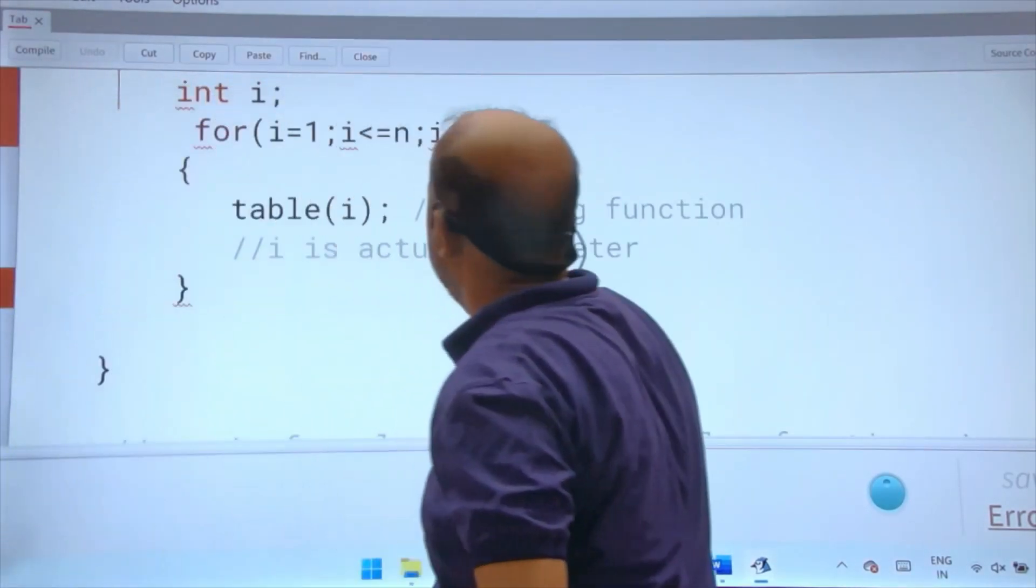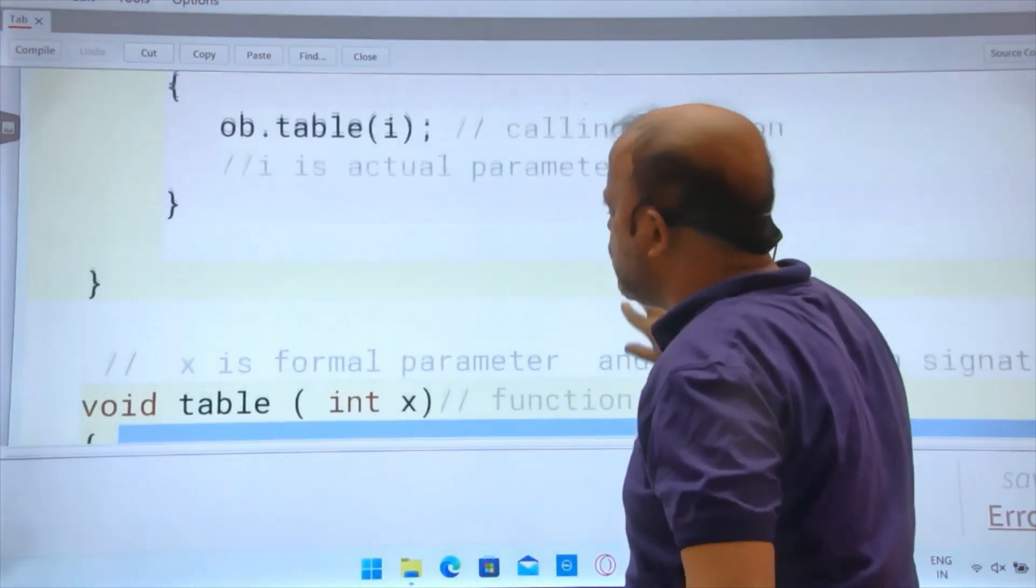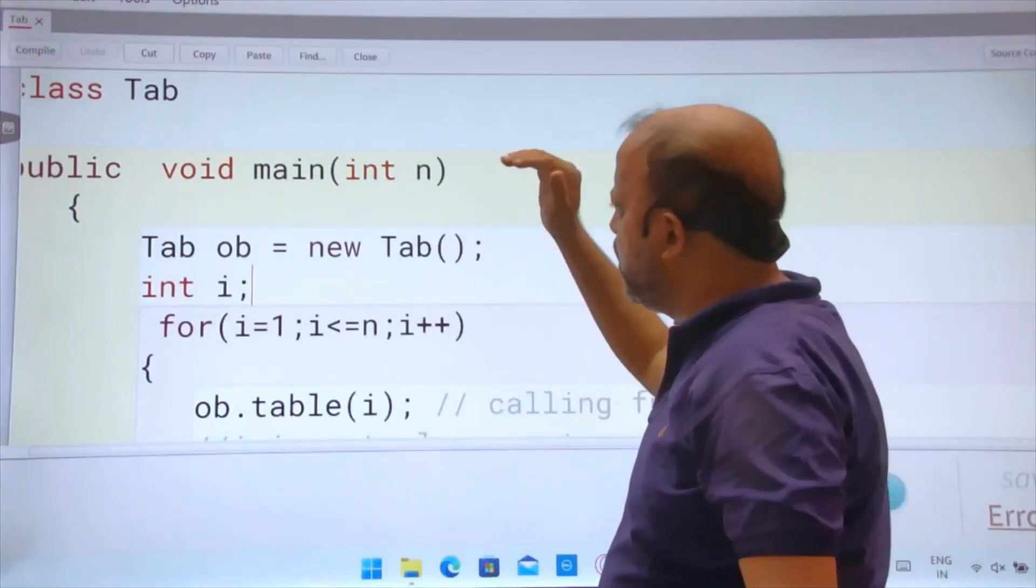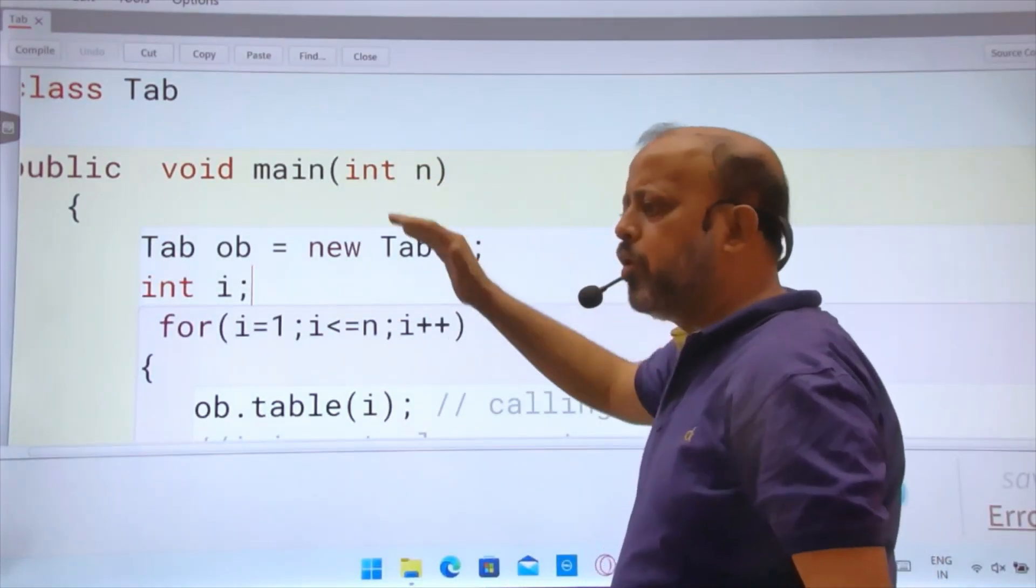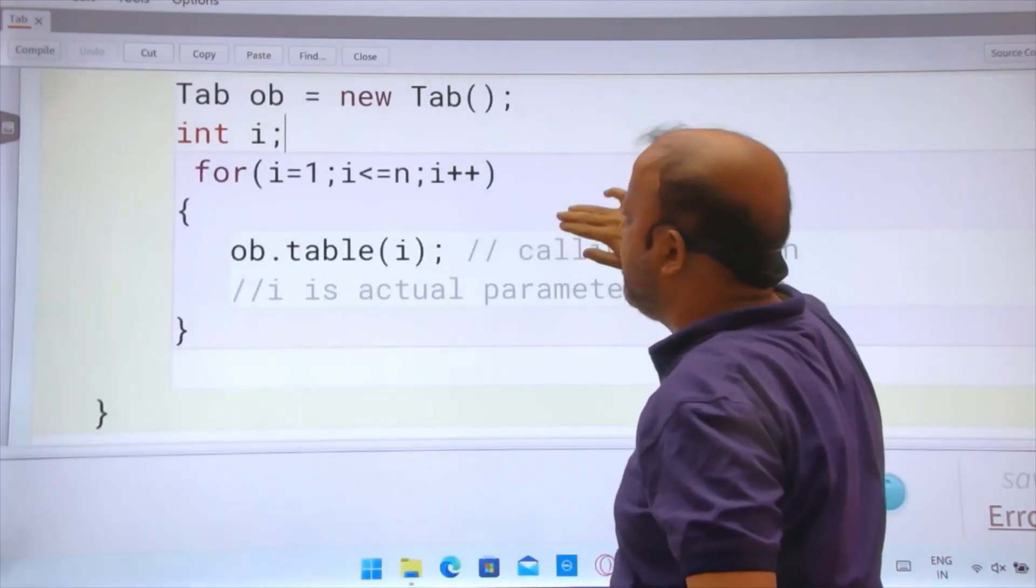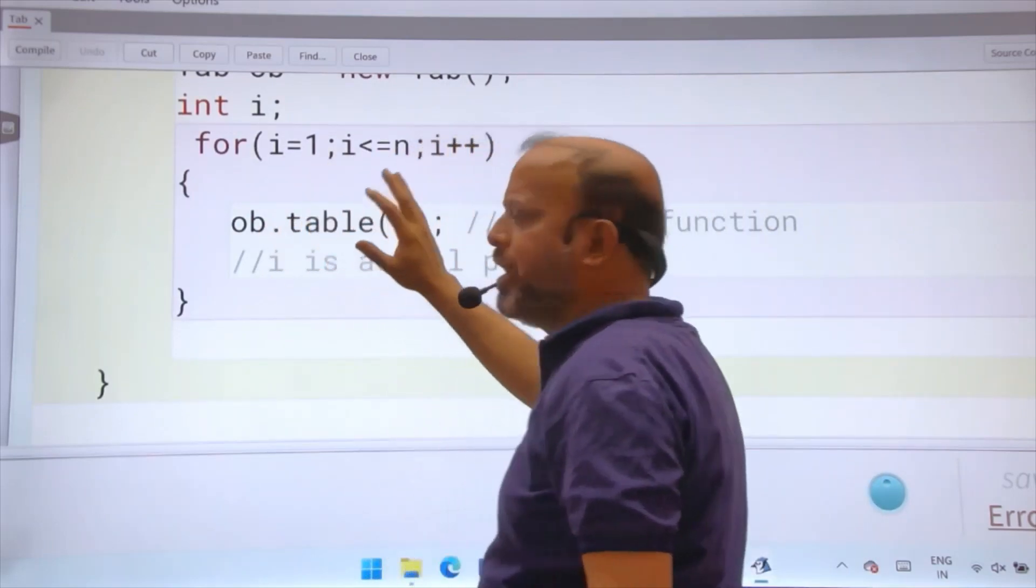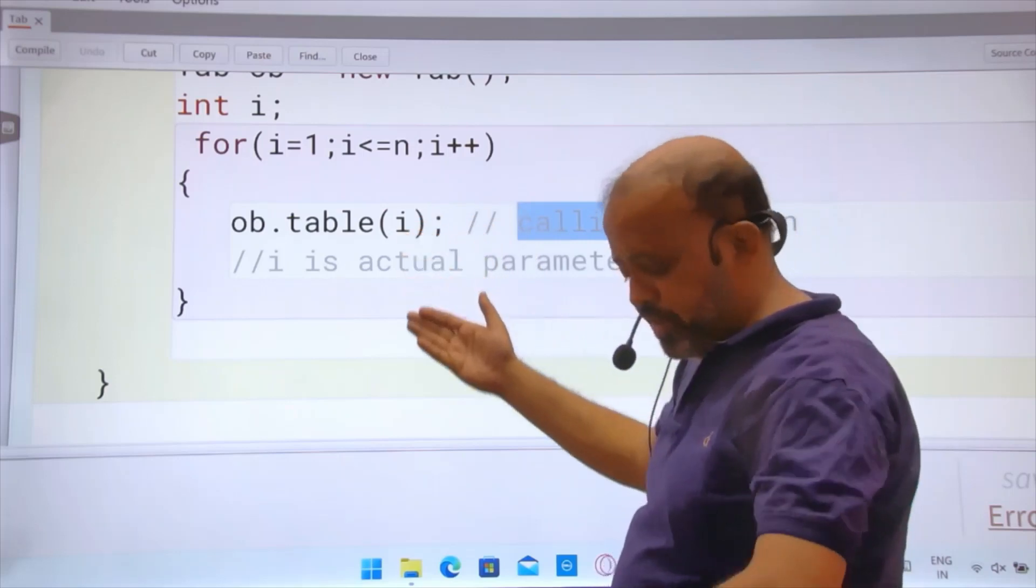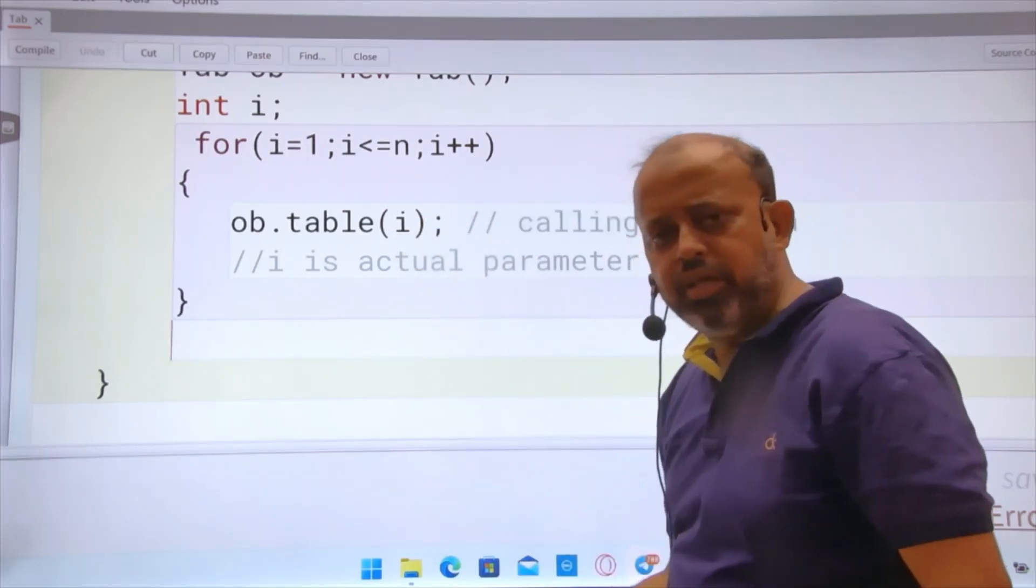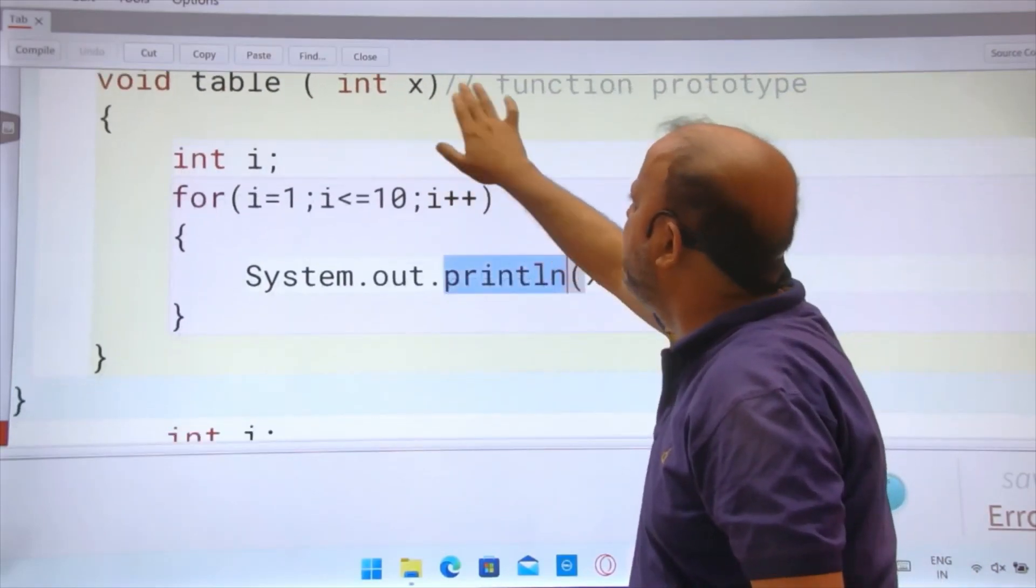Same thing is there. If you are using static in both, then no need to create an object. But if you are using public static void main, then create object and call. So this first program we did is table of a number using function. Loop runs one to n. ob dot table i. Table function we assumed gives table of any number. I passed, but table is not there so I have to define. After this main I have started defining.